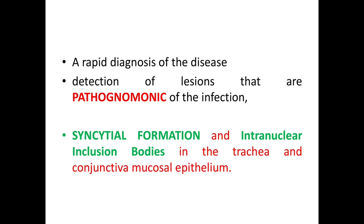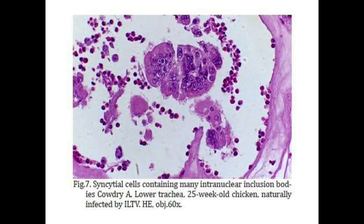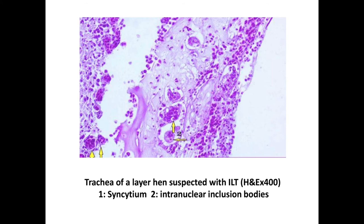The pathognomonic lesions are syncytium formation and intranuclear inclusion bodies in the tracheal and conjunctival mucosal epithelium. This H&E-stained lesion shows syncytial cells containing many intranuclear inclusion bodies, Cowdry type A, in the lower trachea of a chicken infected with ILT virus. Another image of the trachea stained with H&E at 400x magnification shows arrow one indicating a syncytium and arrow two showing intranuclear inclusion bodies.